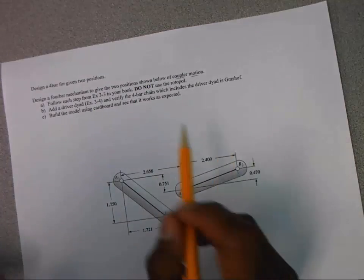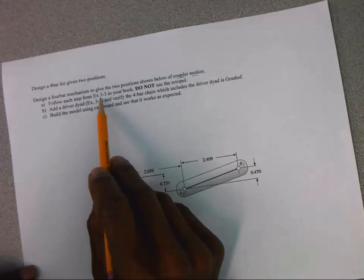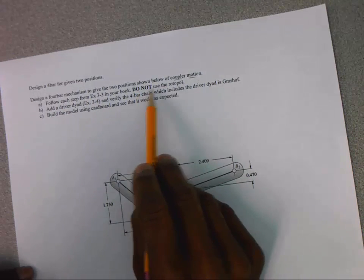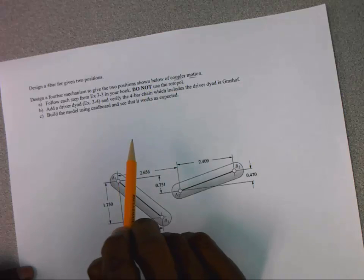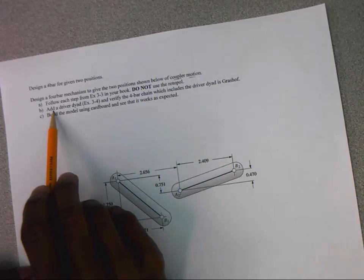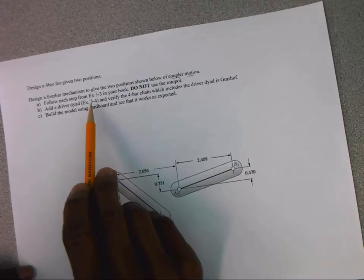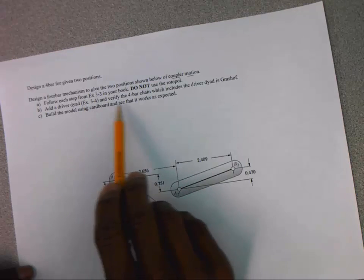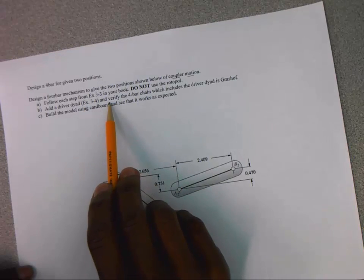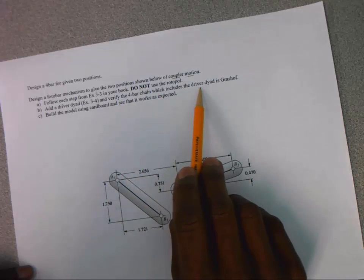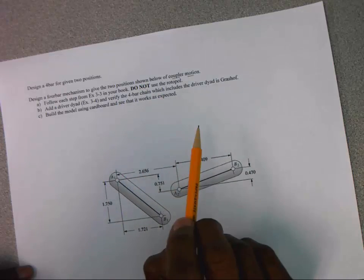We're told here to follow steps from a particular example in your textbook, and we're told not to use the rotopole. At the end we need to add a driver dyad. That's explained in example 3-4 in the textbook also. And then verify that the four-bar chain, which includes this driver dyad we added, is Grashoff.